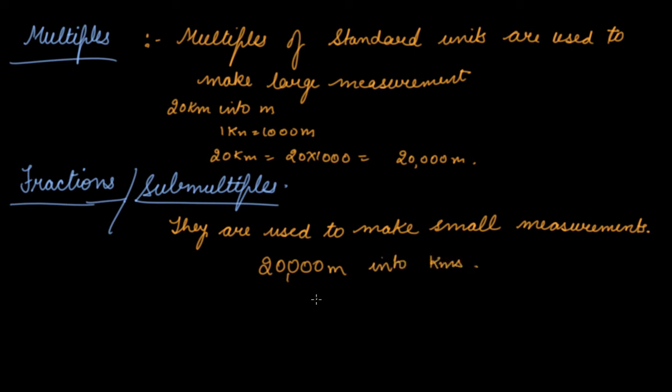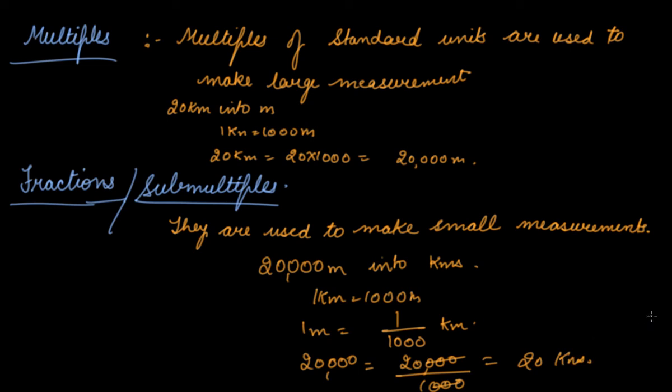If I ask you to convert 20,000 meter into kilometers, 1 kilometer is equal to 1,000 meter. So 1 meter will be equal to 1 by 1,000 kilometer. So 20,000 meter will be equal to 20,000 divided by 1,000, just 20 kilometers. So this is a type of submultiple or fractions.